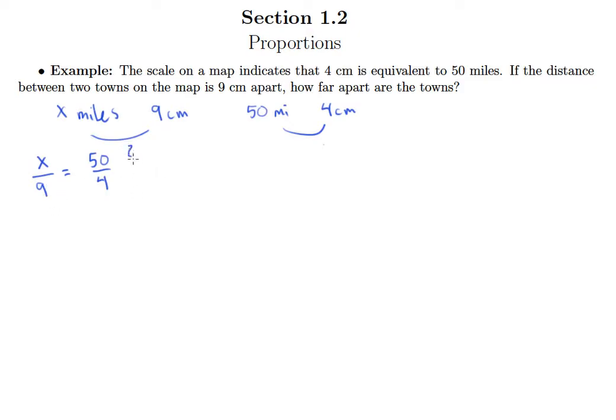But another way to write basically the same idea is that there was no reason the miles had to be on top and the centimeters were on bottom. So if I wanted to put centimeters on top and miles on bottom for 9 over x, that is just fine. It's just that I better do the exact same thing with my other fraction as well. So I still have centimeters and centimeters on top, miles and miles on bottom.